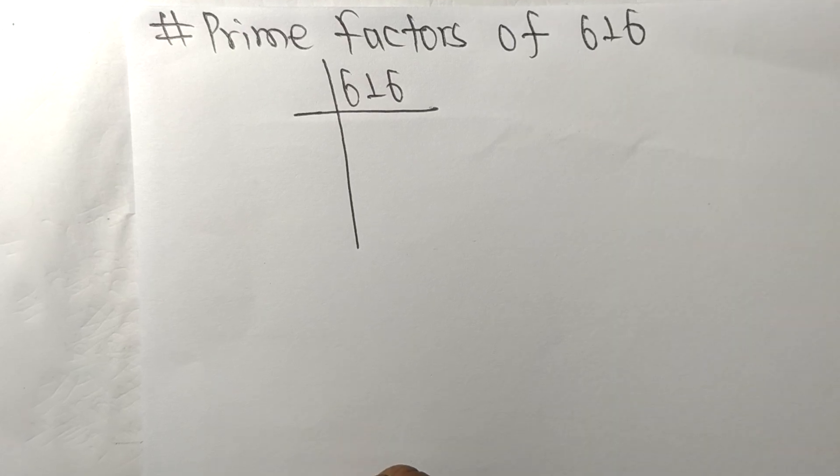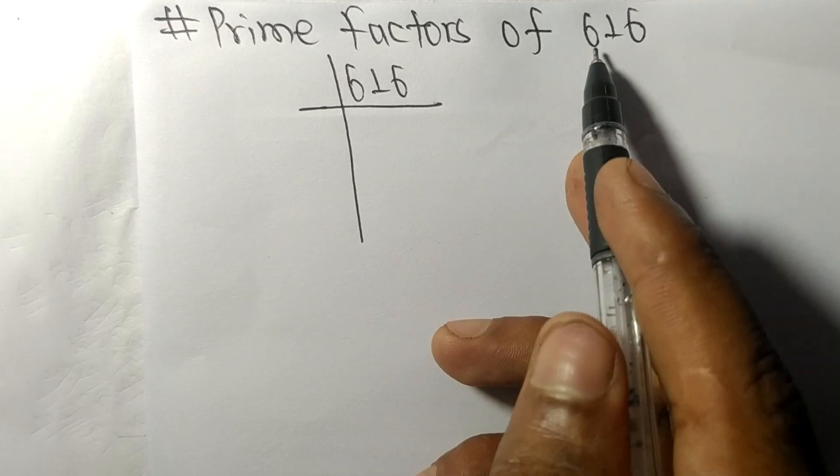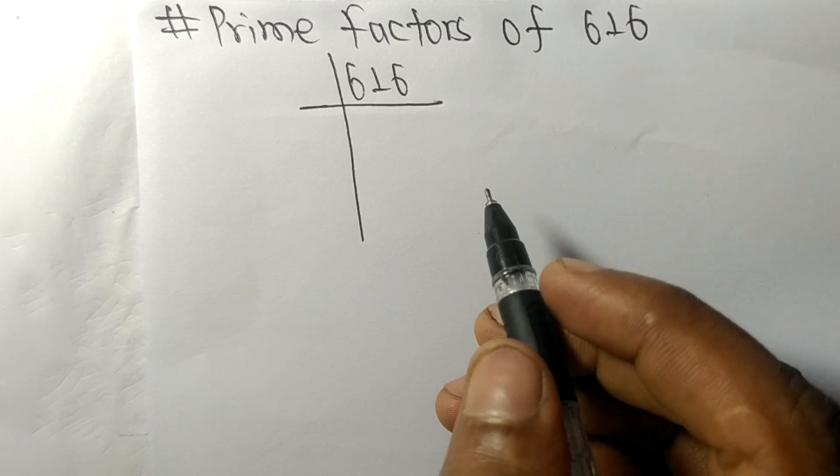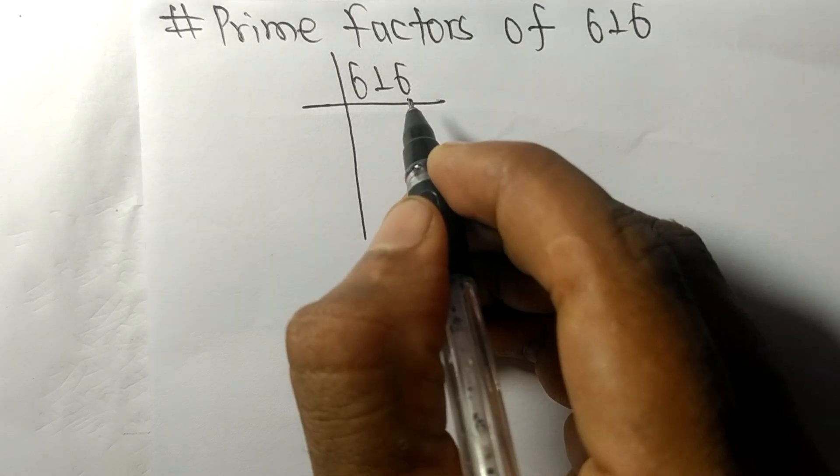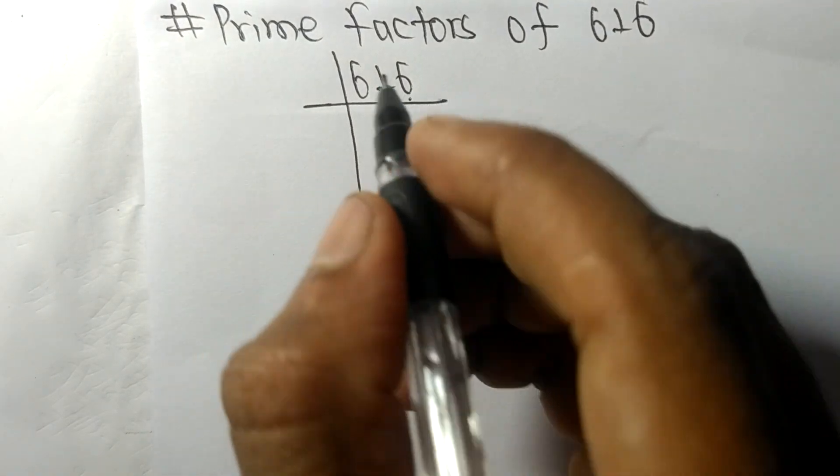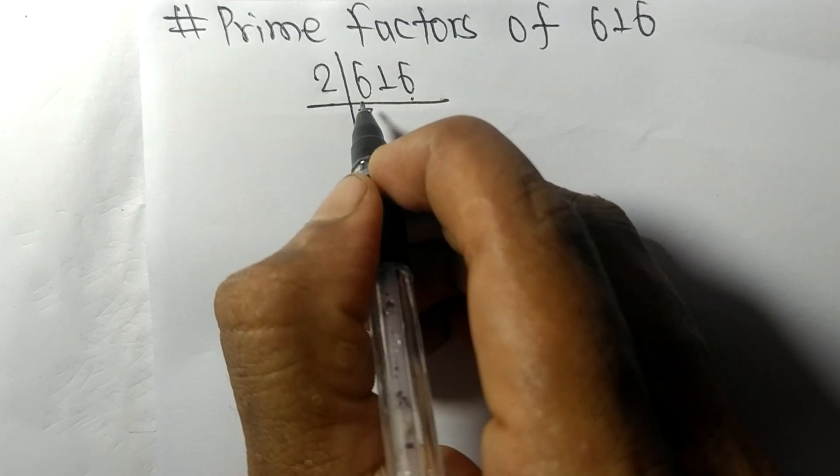So today in this video we shall learn to find the prime factors of 616. It contains an even number six at the end, so this whole number is divisible by two. Two times three means six.